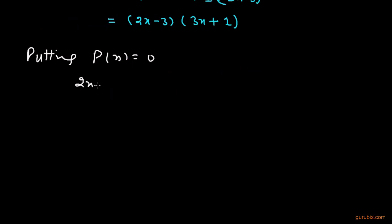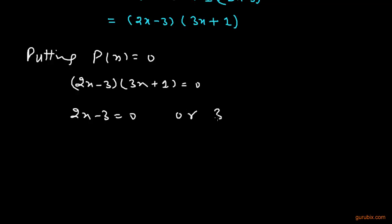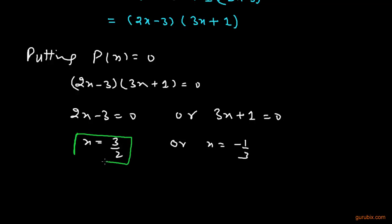Now we set p(x) equal to zero. This means 2x minus 3 equals 0, or 3x plus 1 equals 0. Solving these gives x equals 3 over 2, or x equals minus 1 over 3. So these are the two zeros of the polynomial.